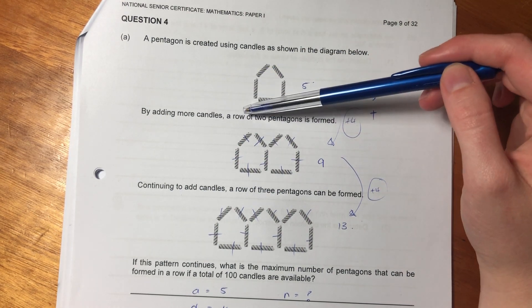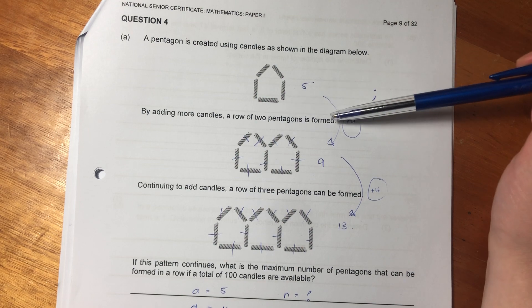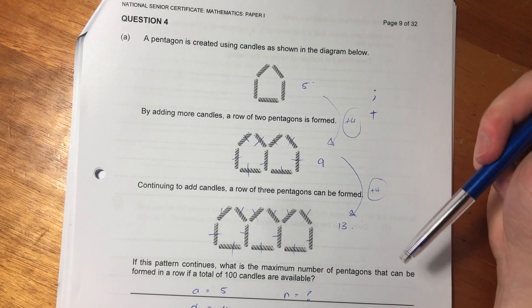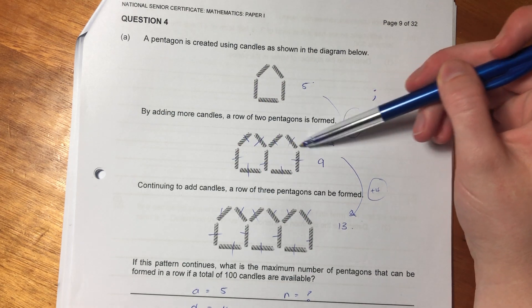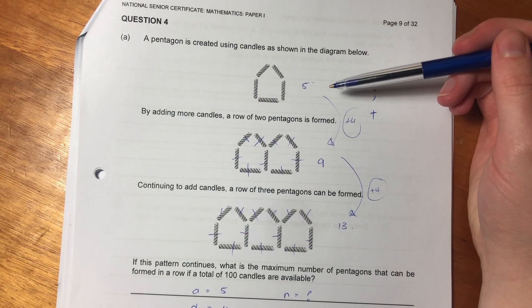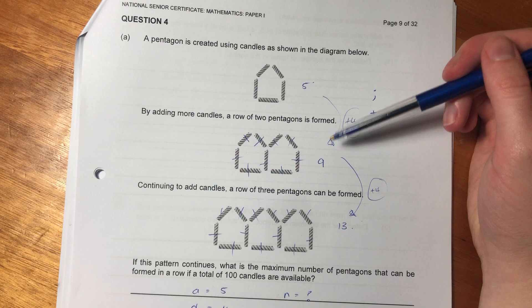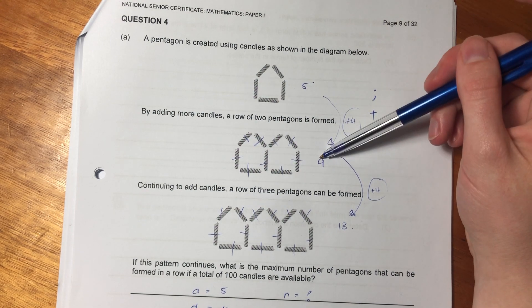Then it says by adding more candles, a row of two pentagons is formed. So I've counted each of the sides and used a little dash to make sure I don't double count, because if you double count, you might actually get to the wrong conclusion when it comes to a general rule. So there's nine candles here.